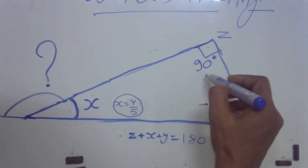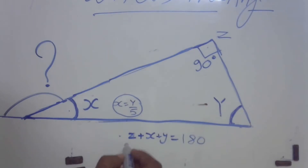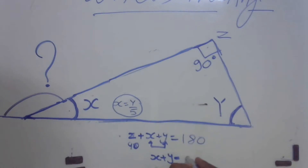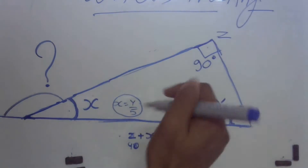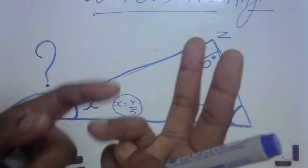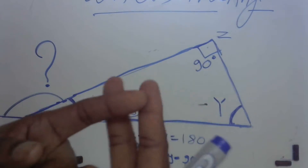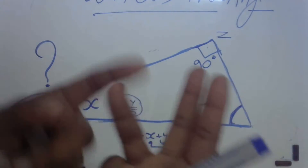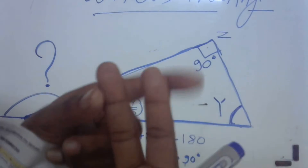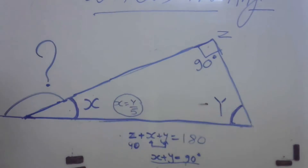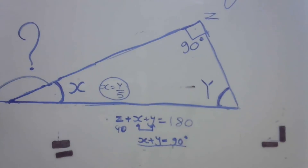You already know that this angle is 90 degrees, so that takes care of z — z is 90 degrees. So can I say that x plus y is equal to 90 degrees? Because if three together are 180 degrees and one is already 90 degrees, then x and y together must be 90 degrees, since 90 plus 90 is 180. So x plus y equals 90 degrees.